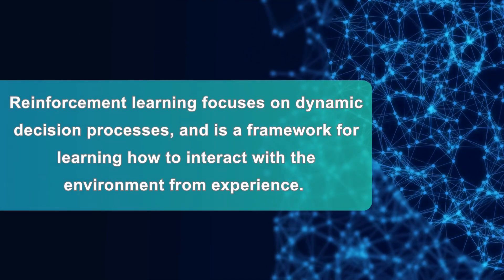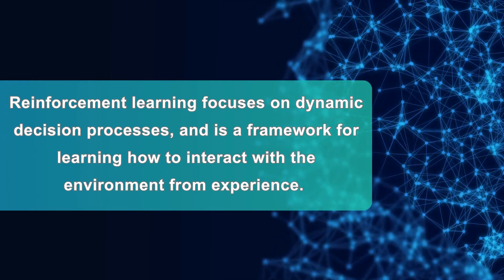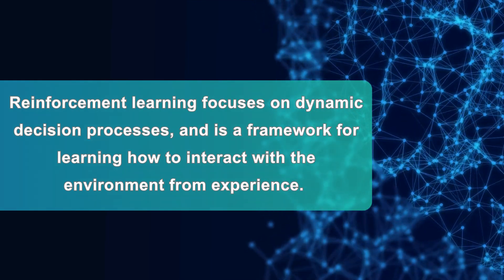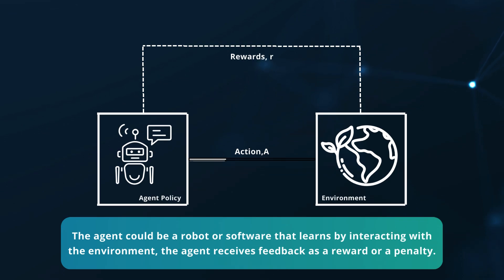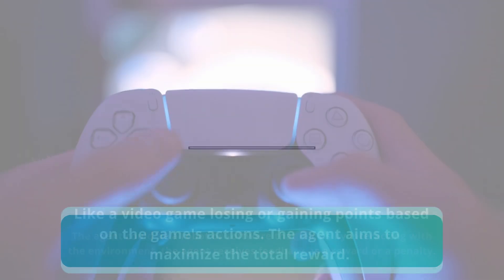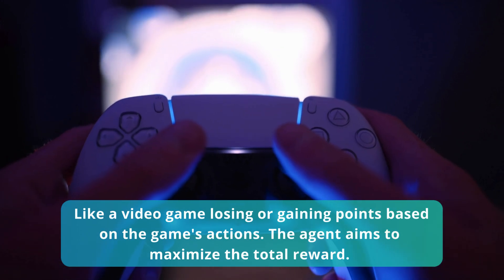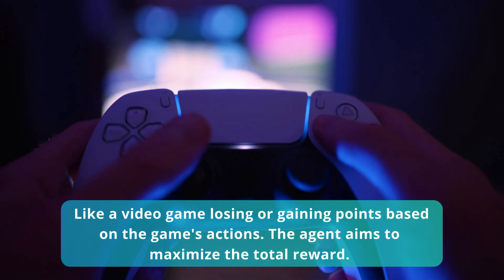Reinforcement learning focuses on dynamic decision processes and is a framework for learning how to interact with the environment from experience. The agent could be a robot or software that learns by interacting with the environment. The agent receives feedback as a reward or a penalty — like a video game losing or gaining points based on the game's actions. The agent aims to maximize the total reward.